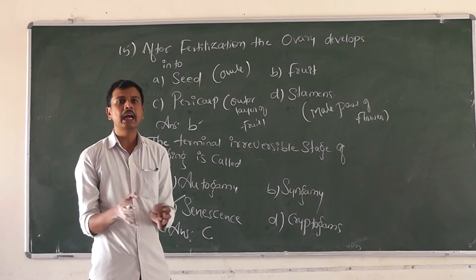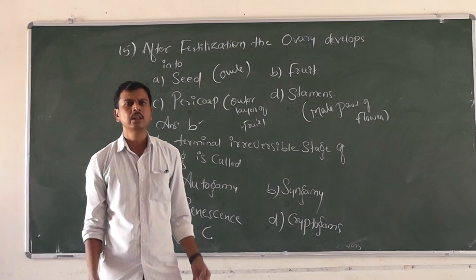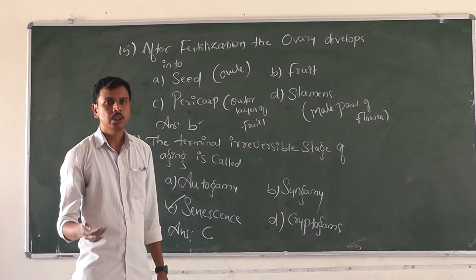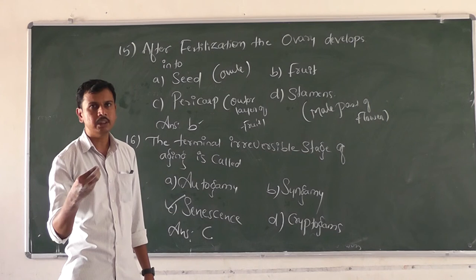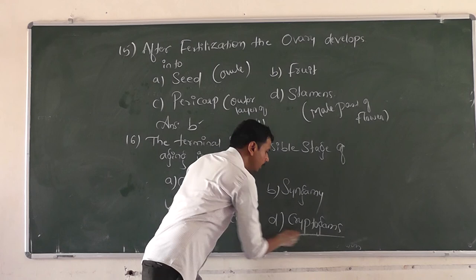Syngamy is the fertilization process — the fusion of male and female gametes is called syngamy. Cryptogams are organisms where reproduction takes place through spores; formation of a new organism through spores is associated with cryptogams. So for question 16, option C senescence is the right answer.